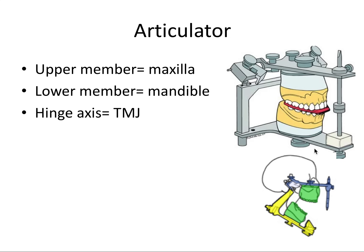The interocclusal record — the bite registration — transfers the relationship between the maxilla and mandible from the patient to the articulator. You use the record to mount the mandibular cast to the maxillary cast after using the face bow. This gives you a physical representation of your patient's bite outside the mouth, which is incredibly useful for doing prosthetic and operative work.